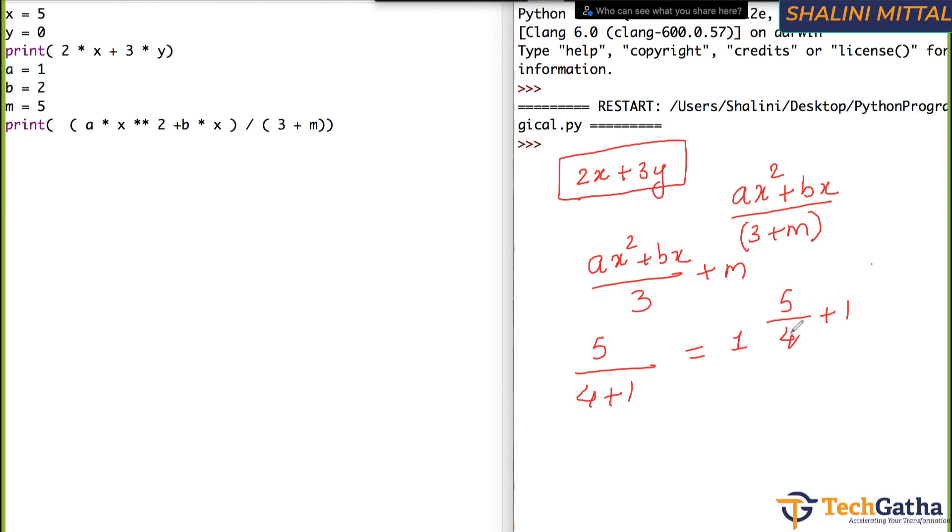This will give me 1. And if I write 5 by 4 plus 1, so this will give me 5 by 4, whatever it is, 1 point something plus 1. So let's see.